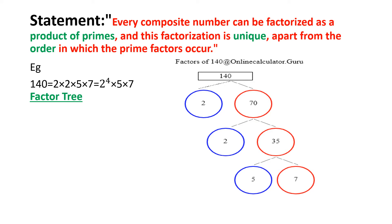This factorization will be unique. For example, if we take 140, the prime factorization is 2 squared into 5 into 7. This factorization will be unique every time — we will always get the prime factors 2, 5, and 7 and no other factor. The order does not matter; we can write 5 first or 7 last, but the factors will remain the same.